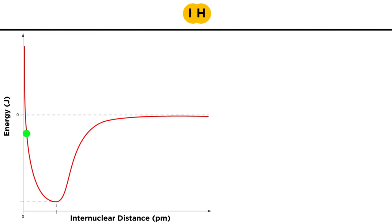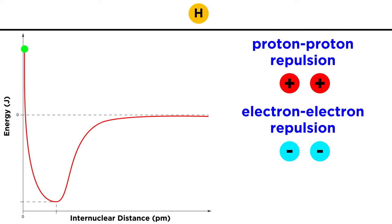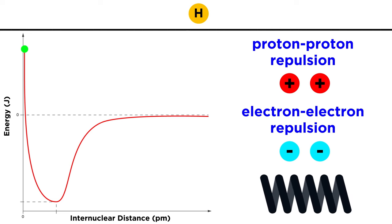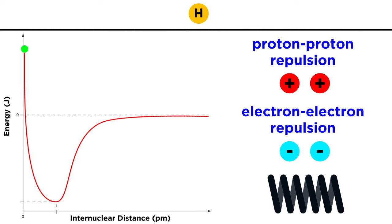However, if we continue to push the protons together, things become less favorable due to cumulative proton-proton repulsion and electron-electron repulsion, which will quickly begin to outweigh any proton-electron attraction. This is sort of like if we were to compress a spring beyond its equilibrium position, and this is why we see the curve rise steeply to the left.